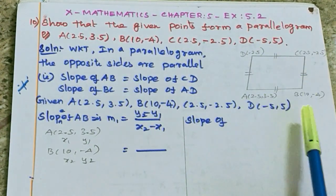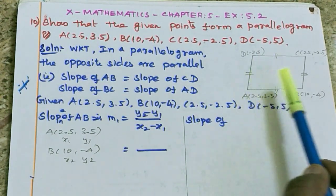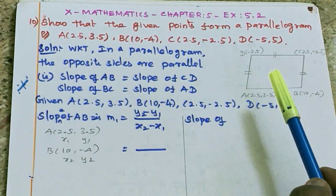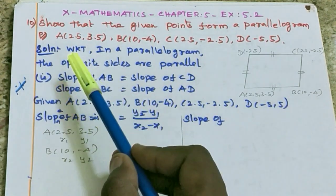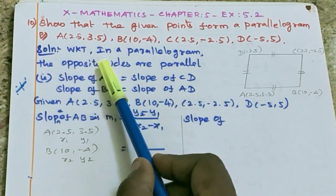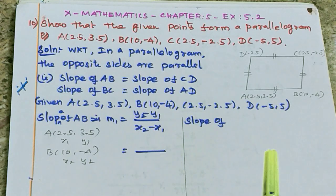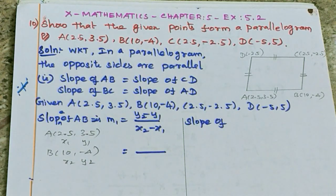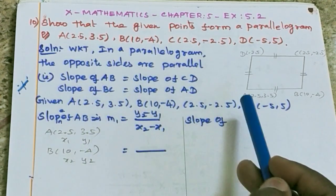Given those points, to prove it is a parallelogram, we need two lines. For a parallelogram, opposite sides are parallel. This is a rule for a parallelogram - we already studied this theorem in 9th standard. For lines to be parallel, slopes are equal. That's all.